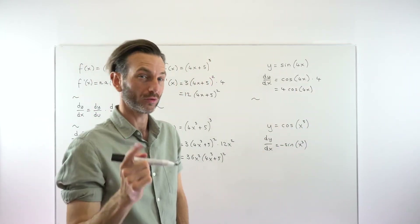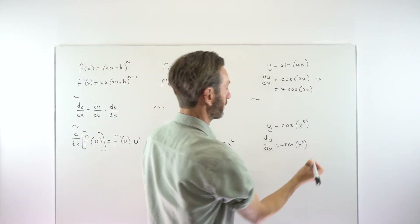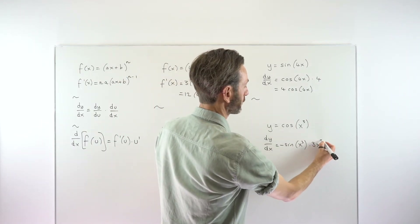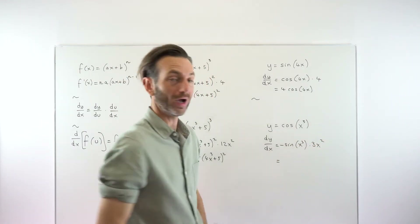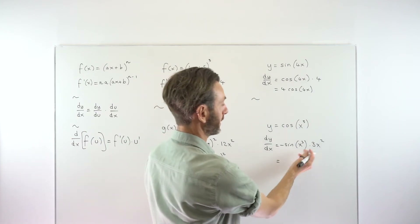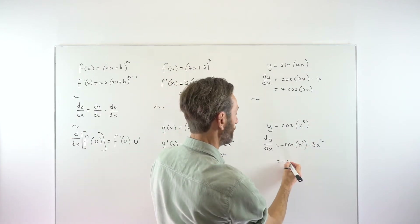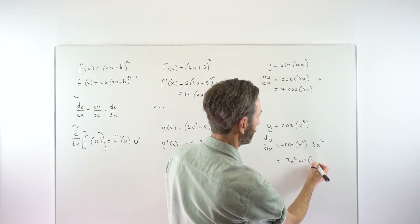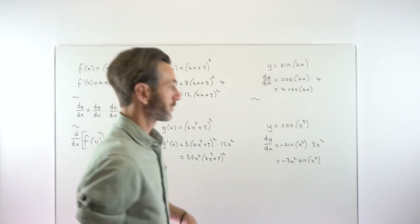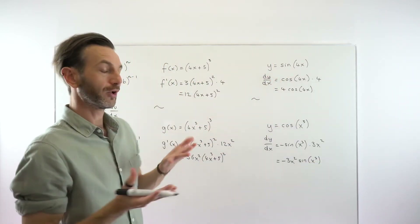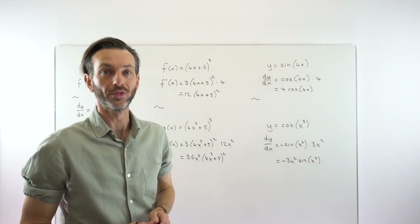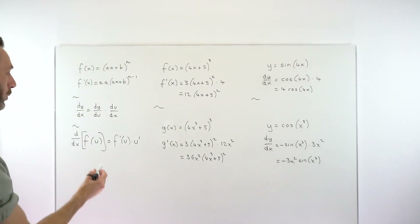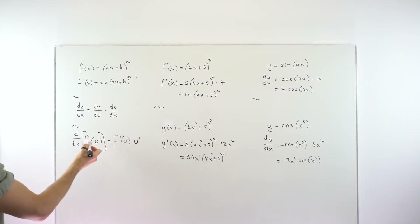That's a really important point — the inside of the bracket always stays the same. We multiply by the derivative of x cubed, which is 3x^2. Tidying up, the term comes to the front, giving minus 3x^2 times sine(x^3). Different types of example, but you can see they're all following the same rule, working effectively with this version of the chain rule.